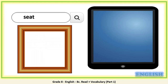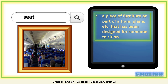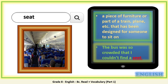Next, we have the word Seat. It's a piece of furniture or part of a train, plane, etc. that has been designed for someone to sit on. For example: The bus was so crowded that I couldn't find a seat.